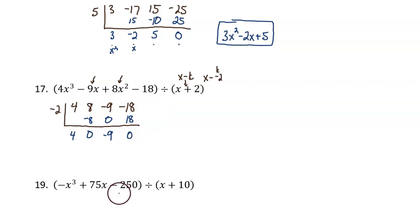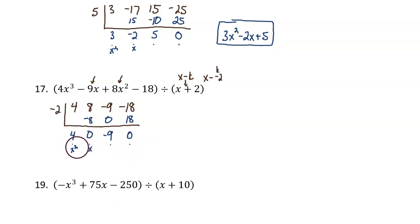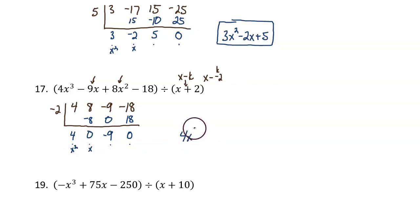Now let's start our process. Bring the 4 all the way below, and now multiply and add. 4 times negative 2 is negative 8. Adding these together makes 0. 0 times negative 2 makes 0. Adding these together is negative 9. Negative 9 times negative 2 is positive 18. And adding these together is 0. The answer is 4x squared plus 0x minus 9.